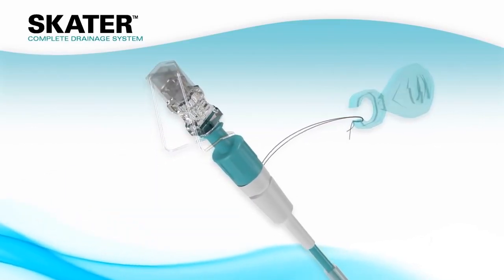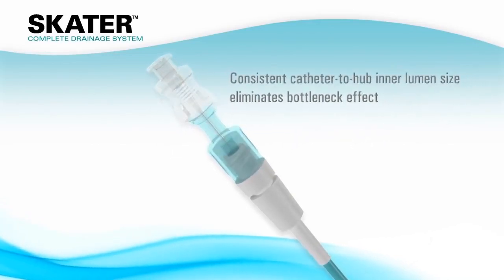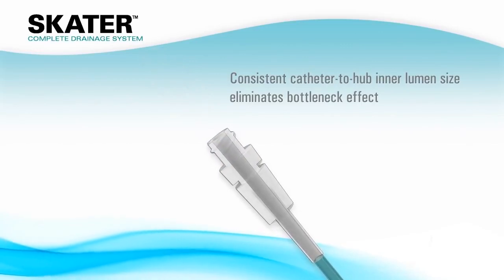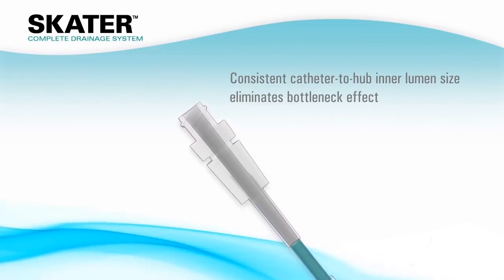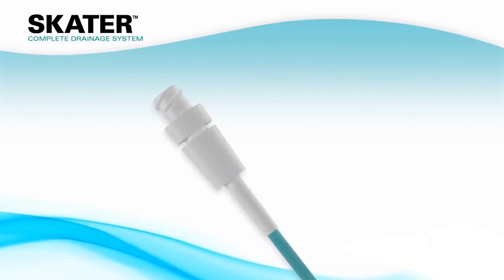The clinician and patient benefits continue at the catheter hub. The hub is sized to match the catheter to provide a consistent catheter body to hub inner lumen size, thereby eliminating a bottleneck effect.